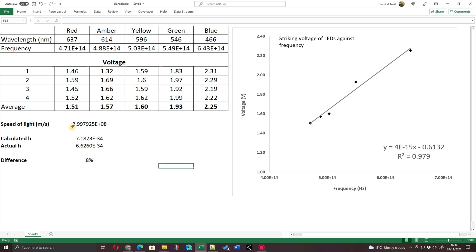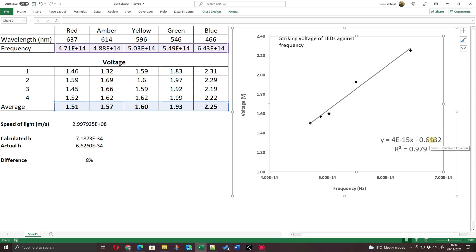I've got the speed of light, 2.99 times 10 to the 8 metres per second. And I've got a calculated H Planck's constant and the actual Planck's constant. And actually using the numbers we generated, we get 8% difference, actually 8% higher if you look, than the actual Planck's constant. If we look at the graph I've drawn, you can see the equation of the line with the 4 times 10 to the minus 15 being the gradient. And then we've got an intercept and an R squared of pretty much almost one. So it's a reasonably good fit of a straight line.